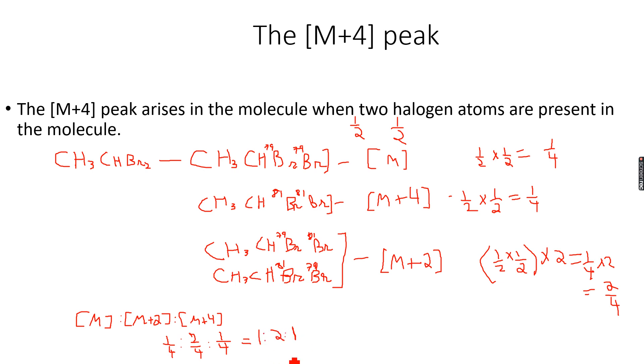In case of bromine, when we have two bromine atoms, we can have several combinations. We can even have chlorine and bromine in the same molecule, and those give us the M plus 4 peaks as well. I am not erasing all this; you can note it down.